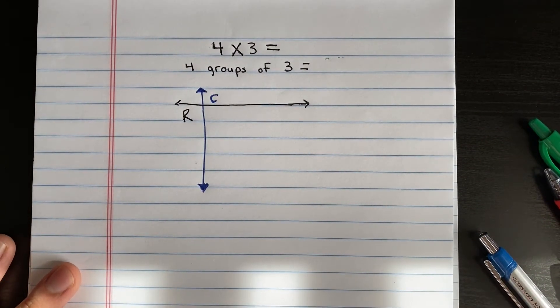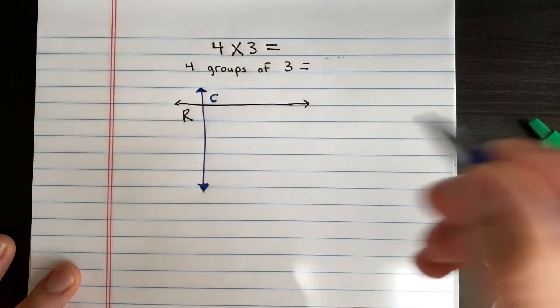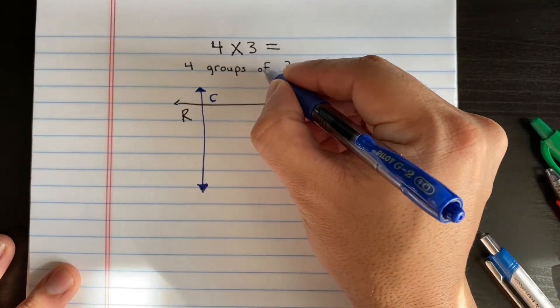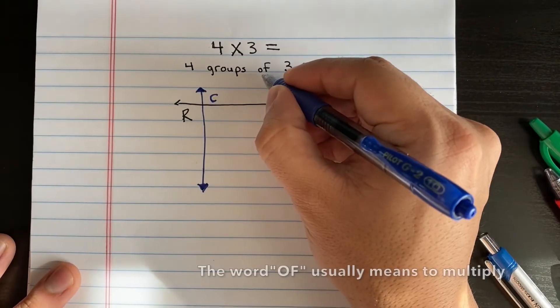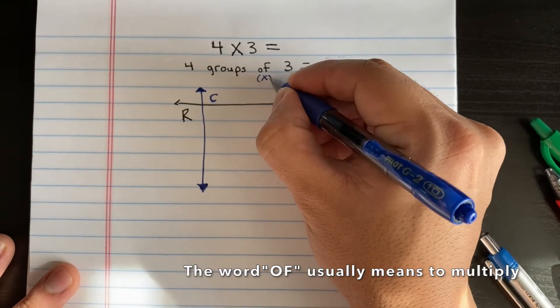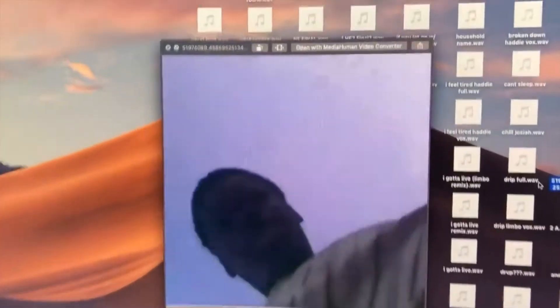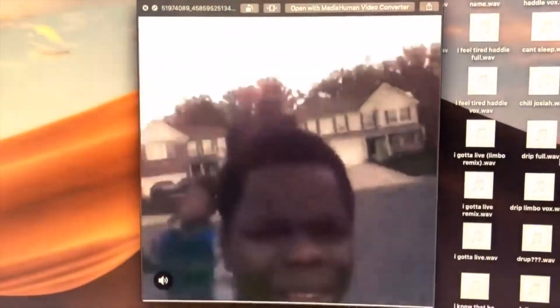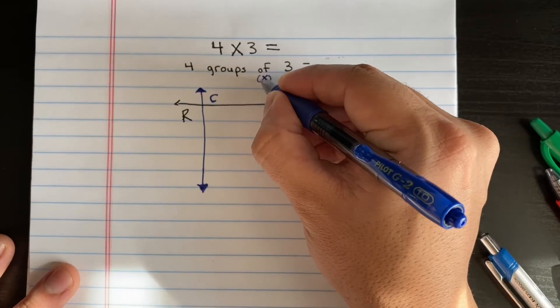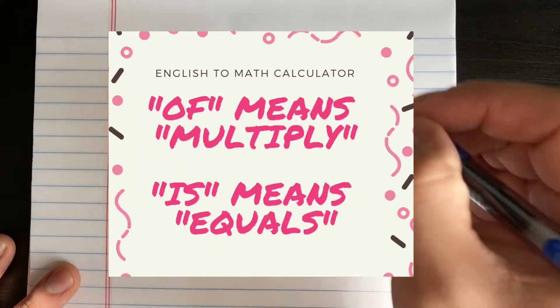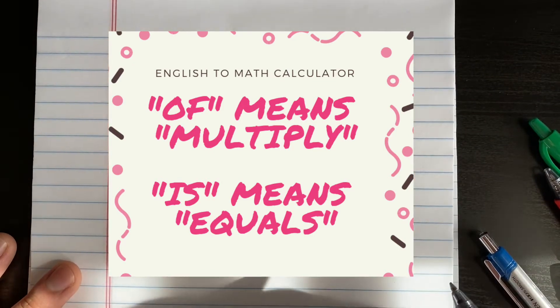So we're going to make, we're going to change something here. I tell my students, anytime you see the word of, that means to multiply. Okay, so you can put a little X right here. So that tells you, you need to multiply when you see the word of.